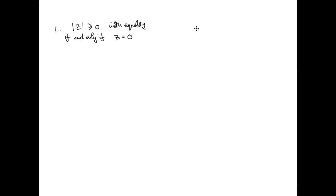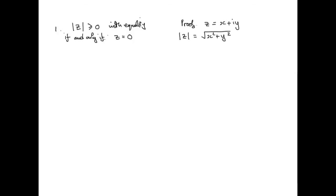So how do we prove this fact? As always, we'll write z as the complex number x plus iy. The definition of the modulus is the square root of x squared plus y squared. That's a positive square root, so the question is what about when it equals zero.